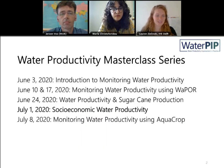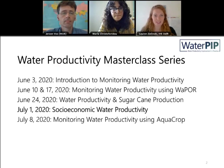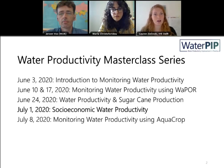Today is week five out of six. The first week we discussed the concepts of water productivity and how to monitor it. Weeks two and three, we used the WAPOR portal to monitor water productivity, including GIS and Python analyses. Last week, we looked at water productivity around sugarcane production and challenges in Africa. Today we're talking about socioeconomic water productivity with colleagues from Wageningen. Next week, we'll look at monitoring using Aquacrop, an open source software from FAO.